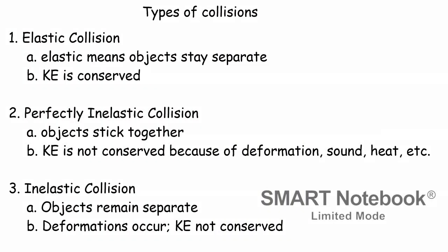There are three types of different collisions when you study momentum interactions. The first of those types is called an elastic collision. So an elastic collision means the objects stay separate. Kinetic energy is conserved in an elastic collision. Perfectly inelastic collisions mean the objects stick together. Now kinetic energy is not conserved because of deformation, sound, heat, all kinds of other things that are hard to take account of using conservation of energy equation. It's not like it's not conserved. It is. It's just hard to account for.